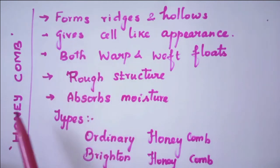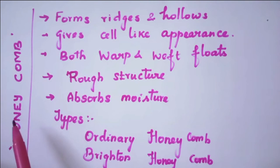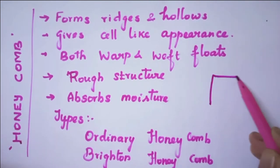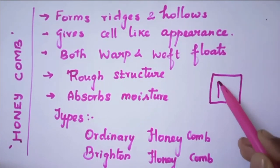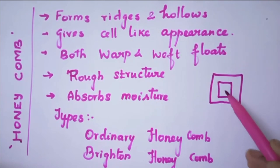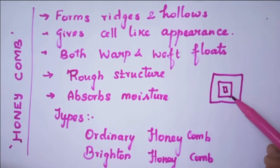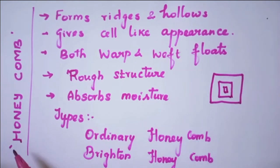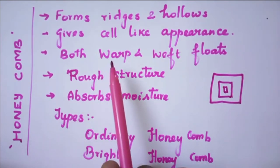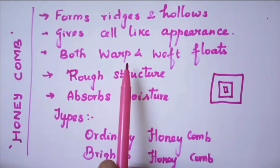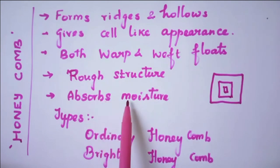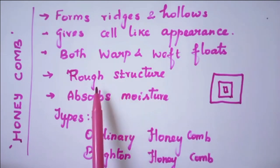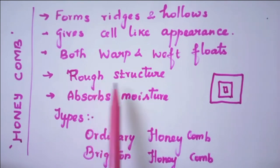In the honeycomb, if you look at the fabric structure, you can see that there is a cell-like appearance — that means there are ridges and hollows in the fabric. If you look at the made surface, you can see the same effect on the fabric surface. This is why the honeycomb texture is used, and this is also why it is used for warp and weft floats, moisture absorption, and its texture and roughness — that means there is a rough structure.